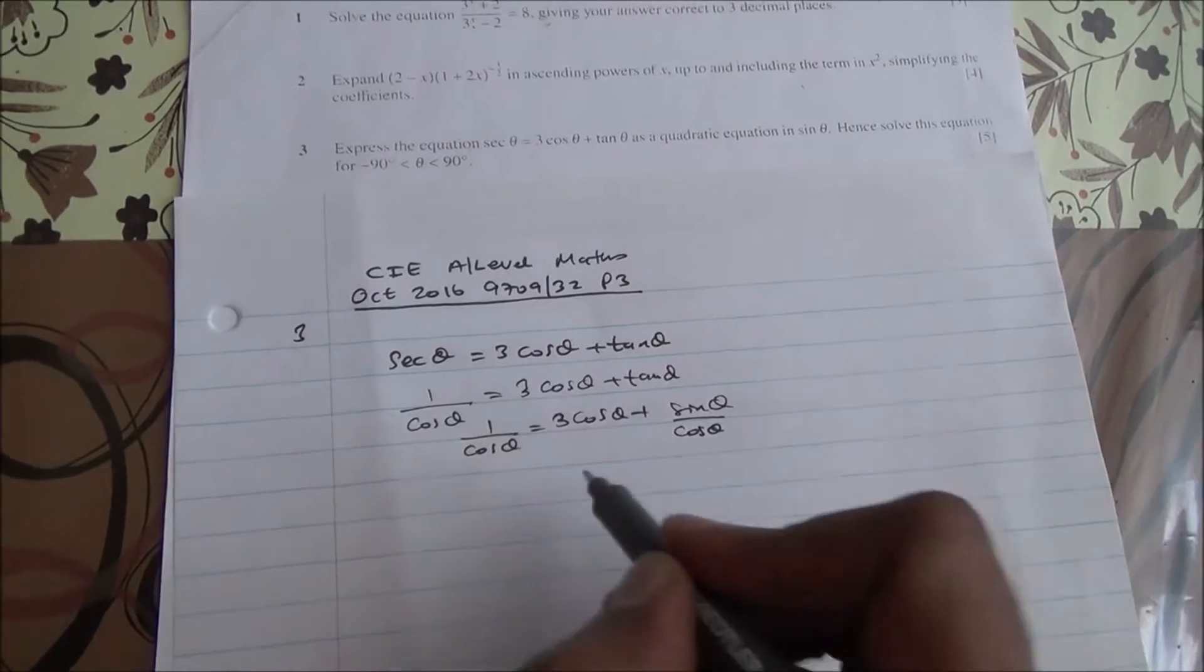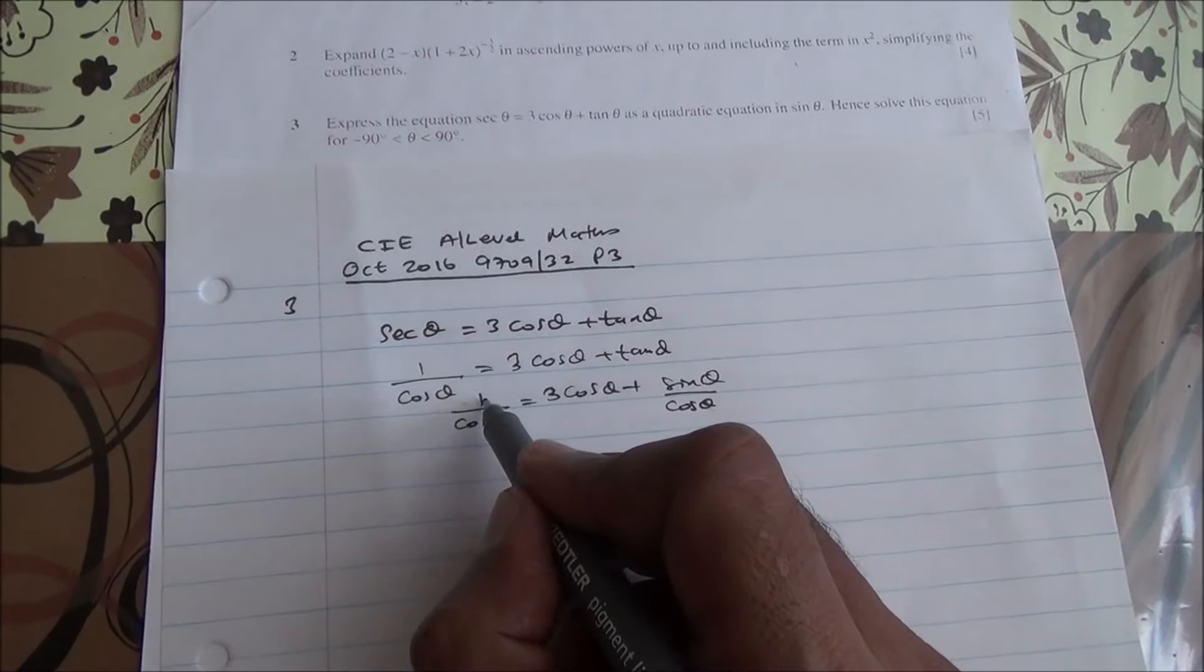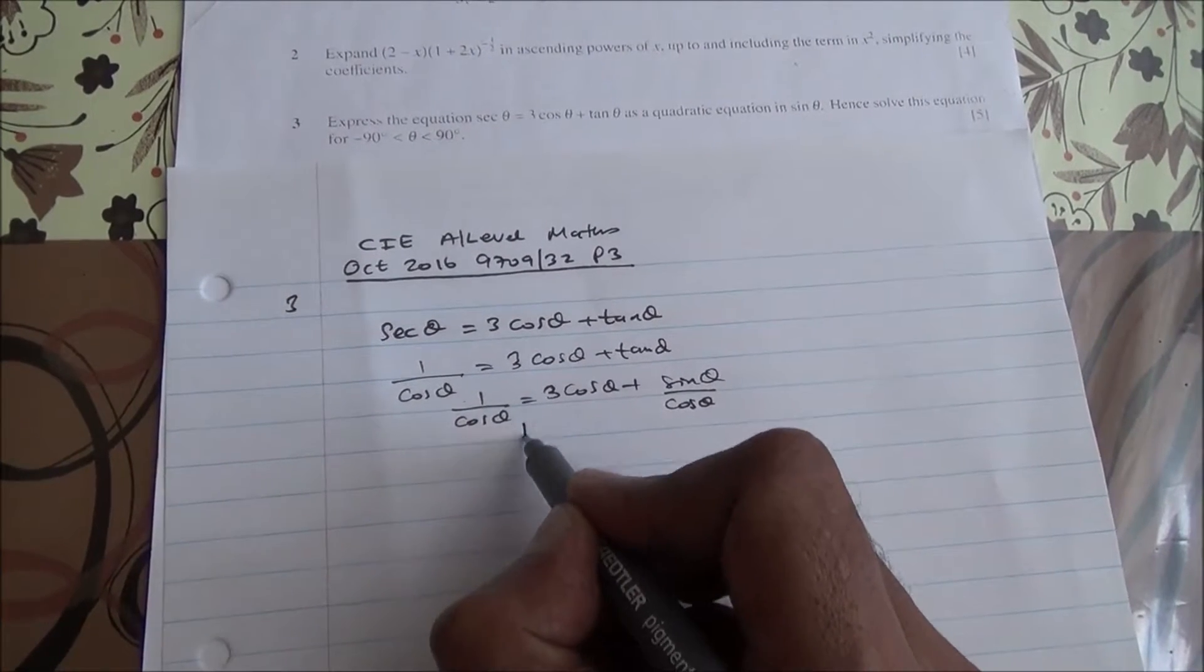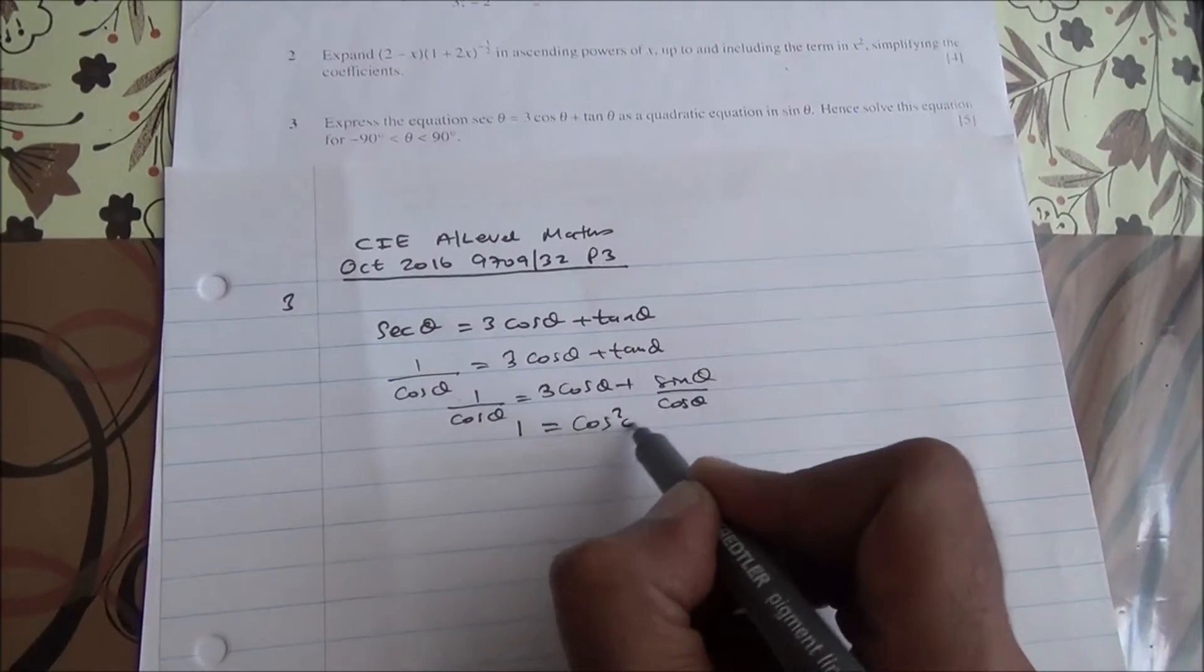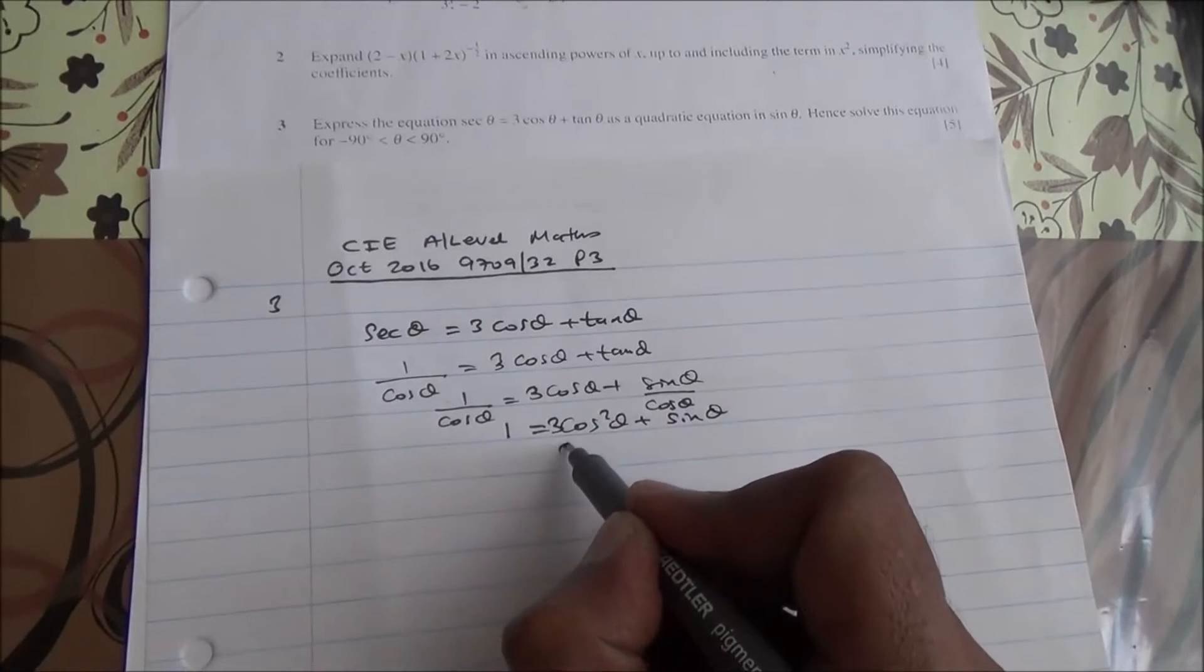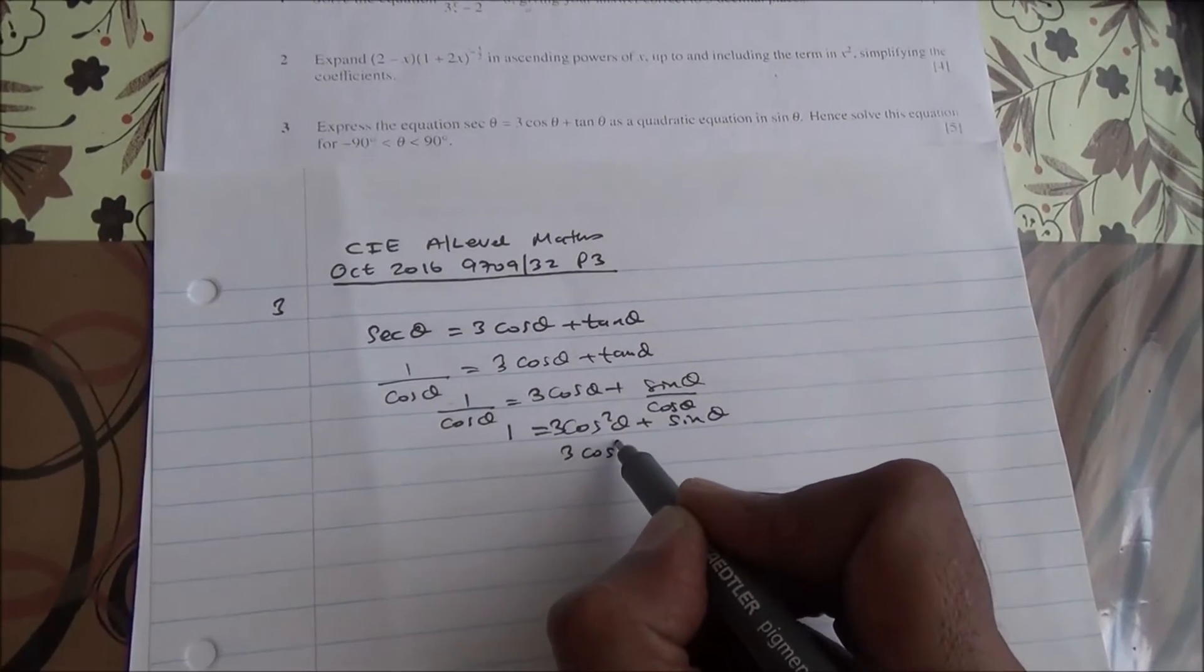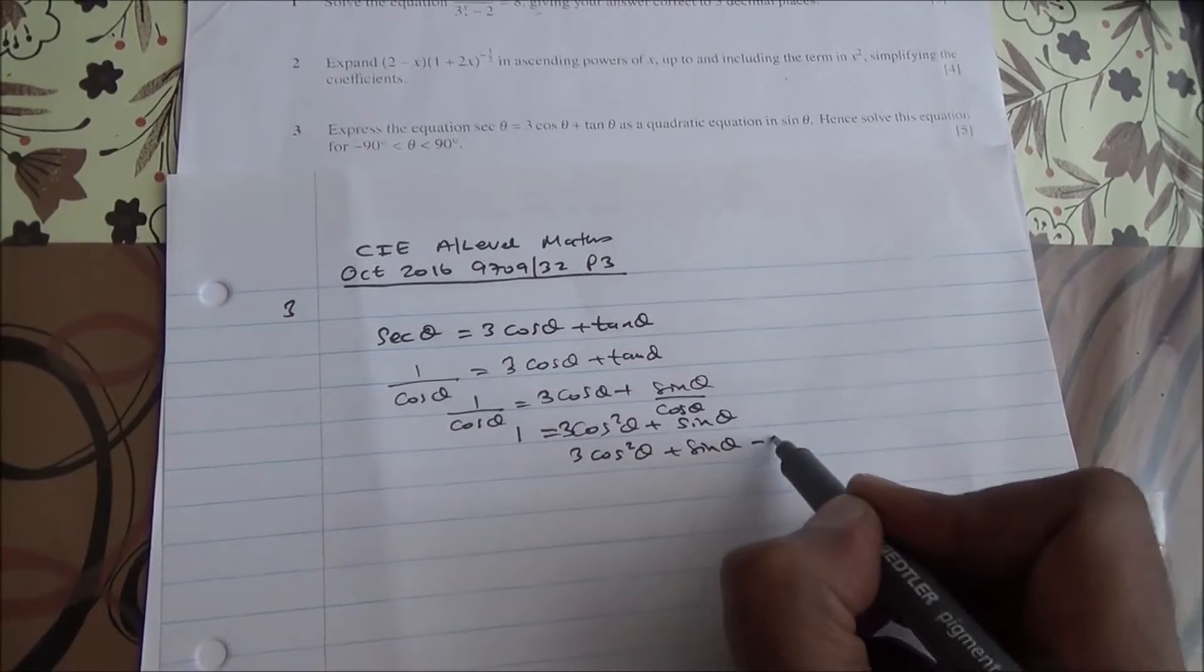If you multiply all of that by cos θ, you're going to end up with 1 = 3cos²θ + sin θ. So 3cos²θ + sin θ - 1 = 0.